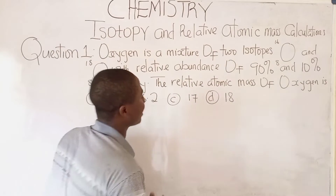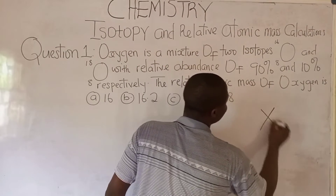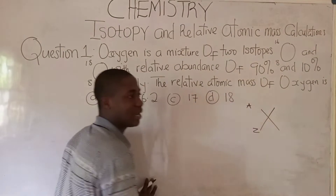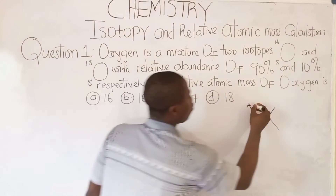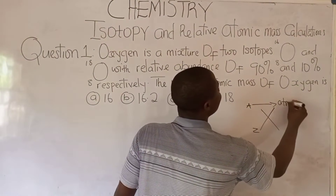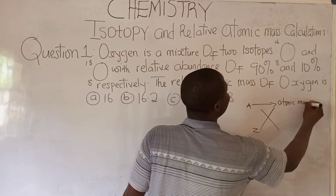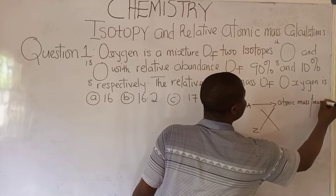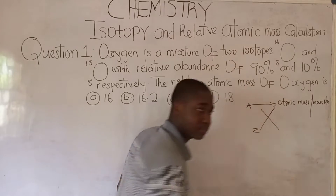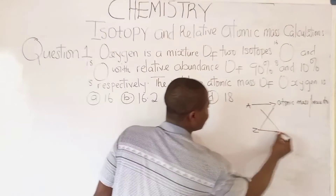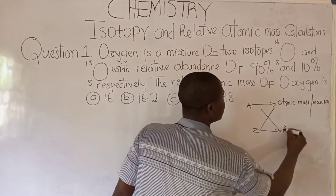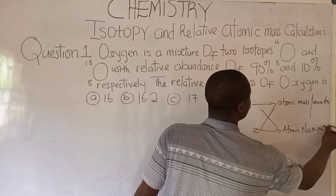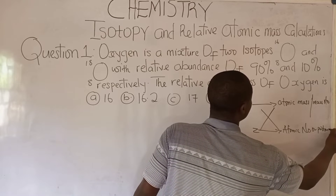Now, let me explain what I actually mean. Let's say we are given an atom X. Here is A and here is Z. A is called atomic mass, or mass number. And Z is called atomic number, or proton number.